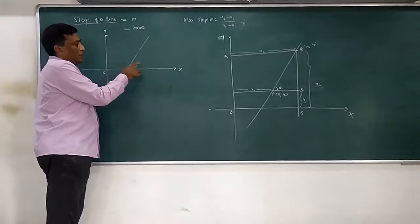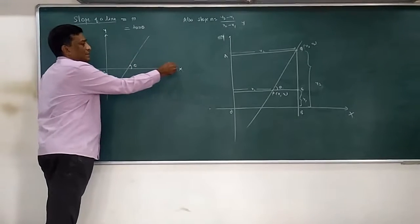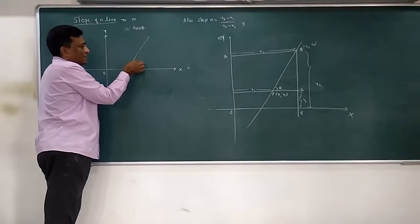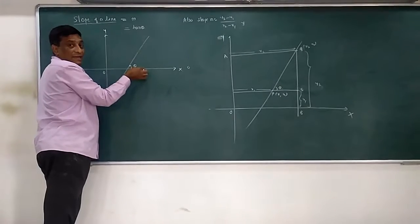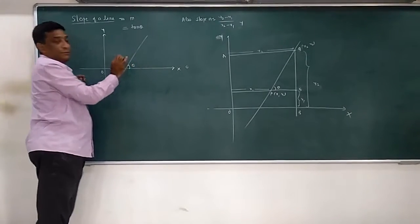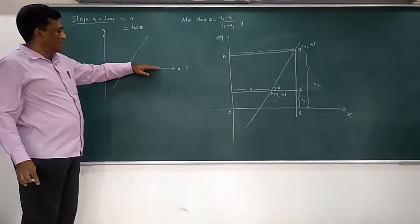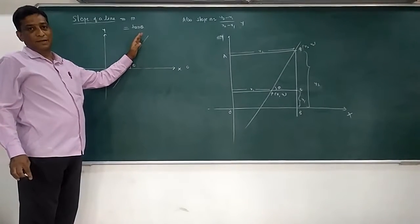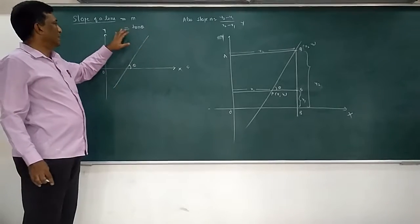Now, what you mean by positive direction of x-axis, this is called zero level. How much angle it makes with x-axis in anticlockwise direction, that gives you slope. So we measure angle from here, zero, sixty, ninety, that gives you theta, inclination.